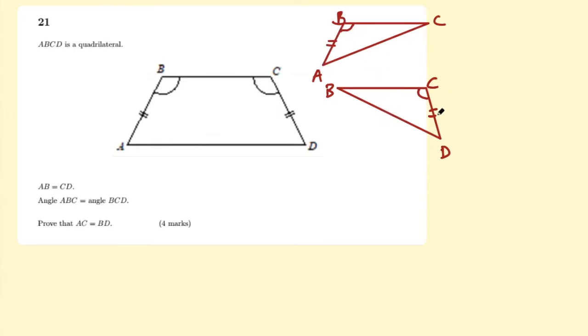So we know that AB is equal to CD, we know that angle ABC is equal to BCD. And we also know that this side up here is equal, they both shared that side BC. So that must be the same.